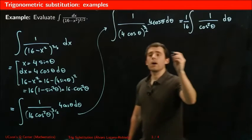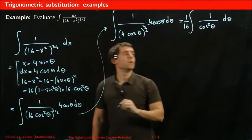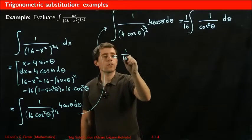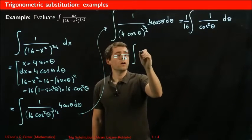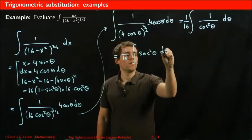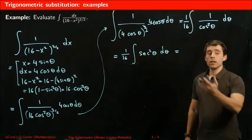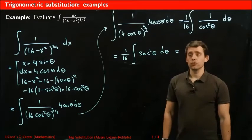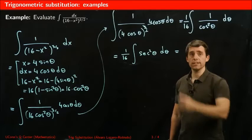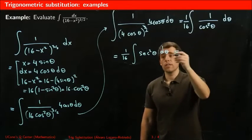Now, this 1 over cosine squared theta, if you don't recognize that integral, perhaps you recognize this one. This integral is related to tangent because, in fact, the derivative of tangent is secant squared. So this is an immediate integral.